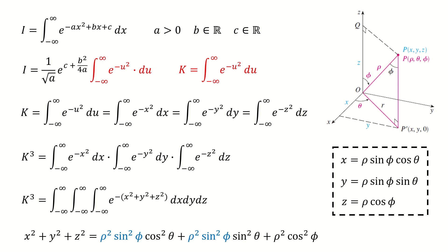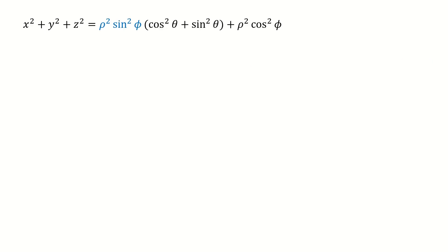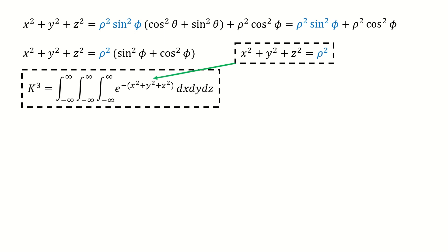Then we plug in this coordinate transformation to compute x squared plus y squared plus z squared. Next, we factor out this blue term and we got here. Because cosine squared plus sine squared equals to 1, we got here. Then we factor out this rho squared. Again, the sine squared plus cosine squared equals to 1, so we got here.